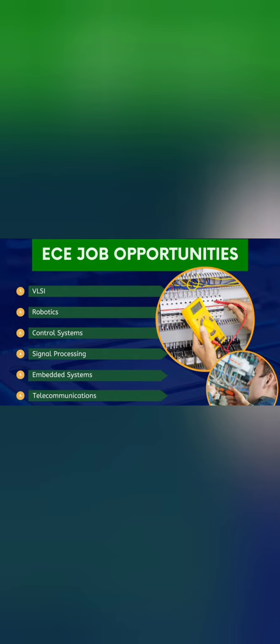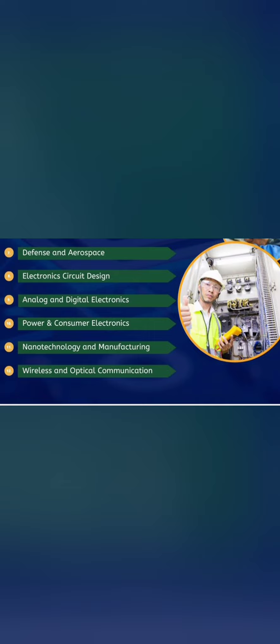ECE has opportunities in VLSI (which I'll discuss later), robotics, control systems, signal processing, embedded systems, and the telecommunication industry. ECE students also have very good scope in defense and aerospace, electric circuit design, analog and digital electronics, power and consumer electronics, newer areas like nanotechnology, manufacturing, wireless communication, and optical communication. That's why ECE is called the evergreen branch — it has good scope across all industries, even banks have requirements for ECE students.